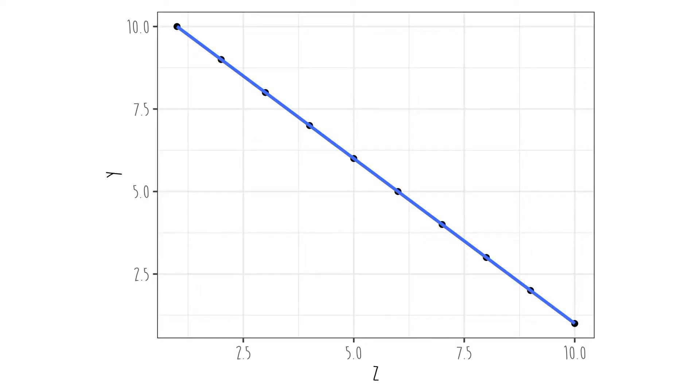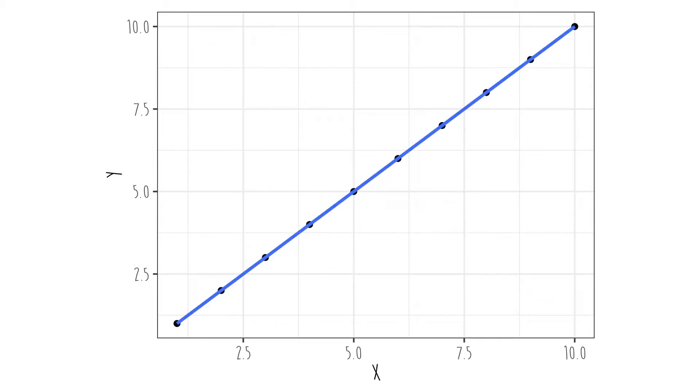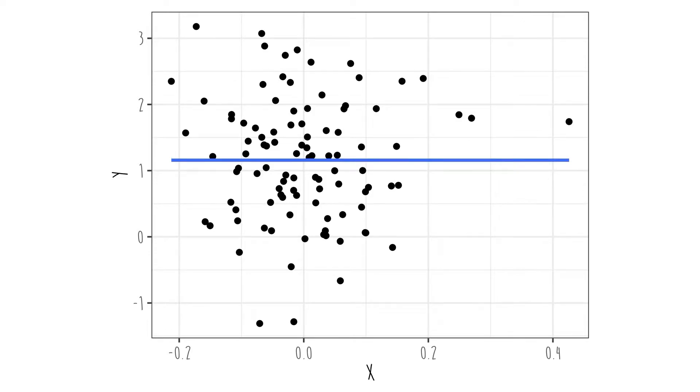Now r ranges from negative one to positive one. Negative one means there's a perfect negative relationship, as in this example. Positive one means there's a perfect positive relationship, like in this example. And zero means there is no relationship. In psychology, basically anything 0.1 or lower is considered weak, 0.3 is considered moderate, and 0.5 is considered strong. But those numbers assume a linear relationship. Sometimes we have a non-linear relationship, and in that situation, the correlation coefficient is very misleading and should not be used.